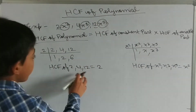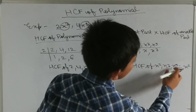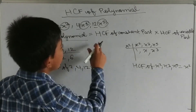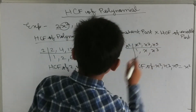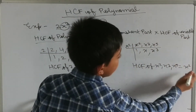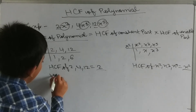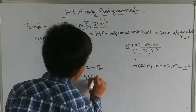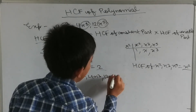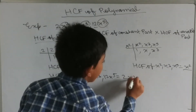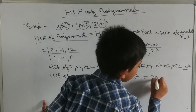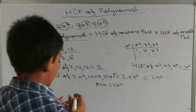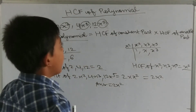So now the HCF of the constant part is 2 and the HCF of the variable part is x squared. We know that the HCF of a polynomial is the product of the HCF of the constant part and the HCF of the variable part. So the HCF of 2x squared, 4x cubed, and 12x to the power 5 is 2 multiplied by x squared, which equals 2x squared. I hope you understand how to find the HCF of a polynomial.